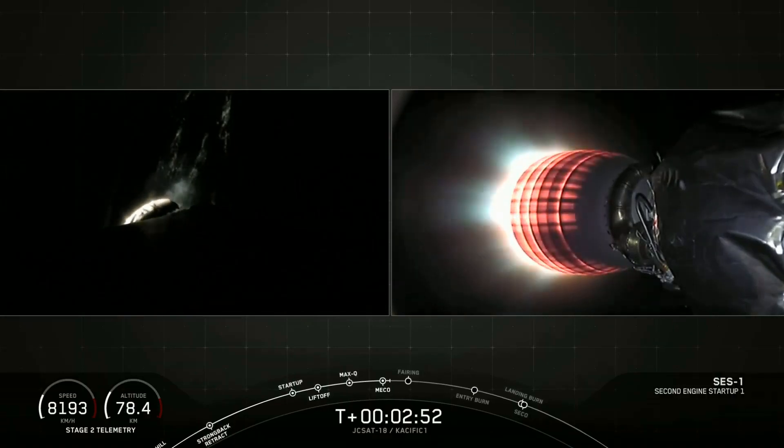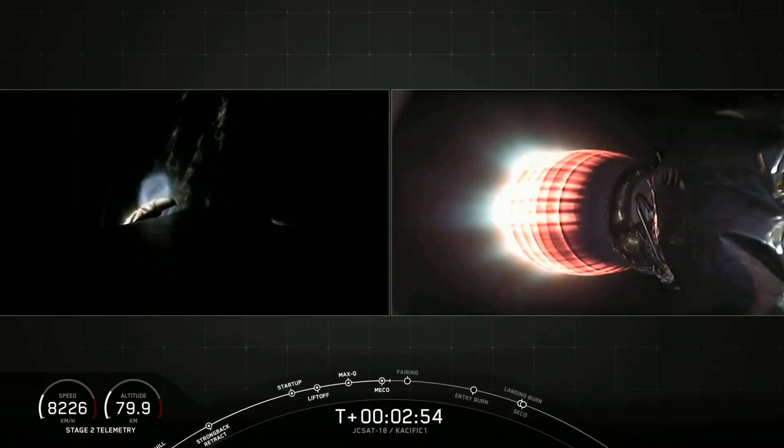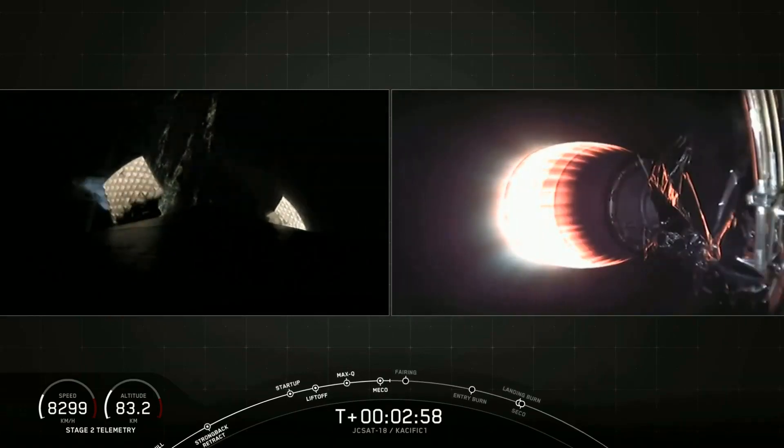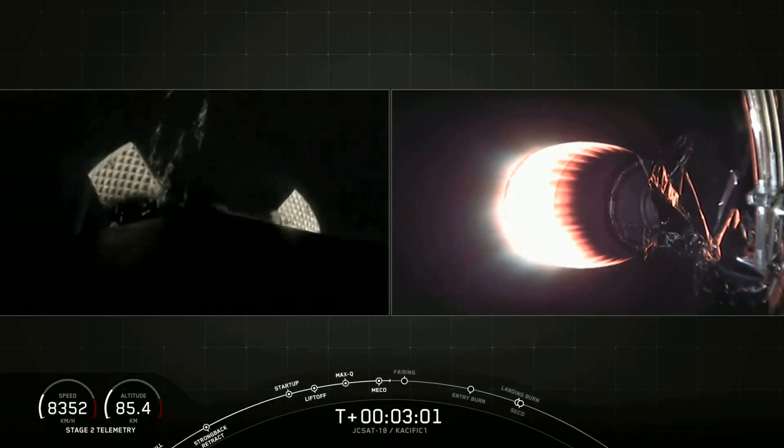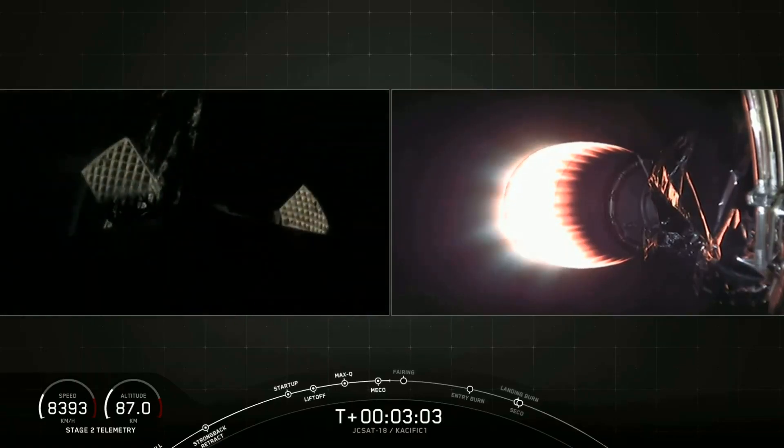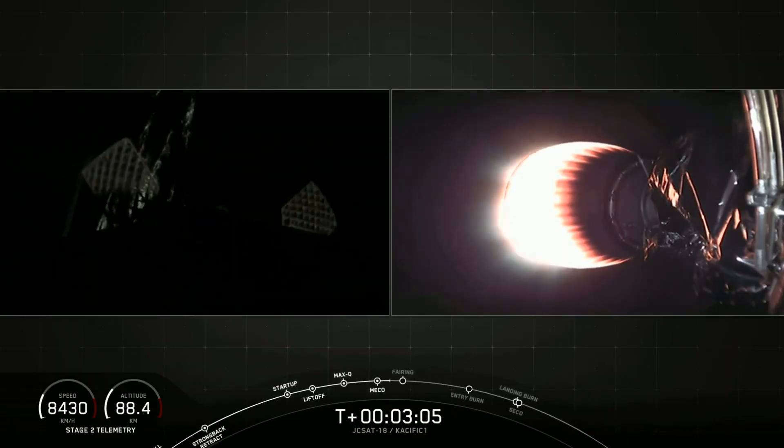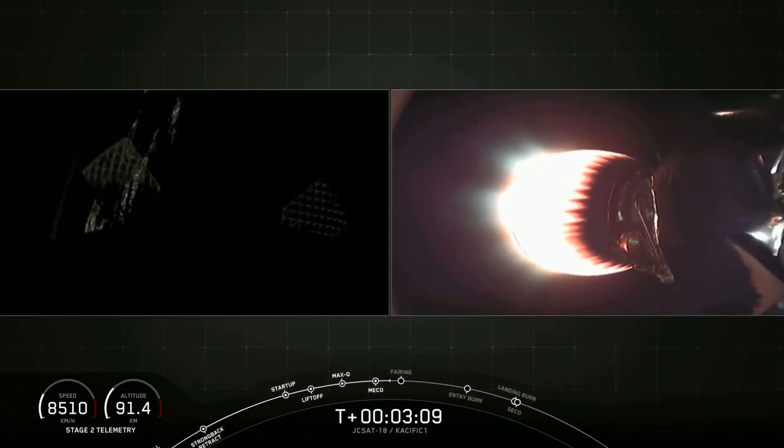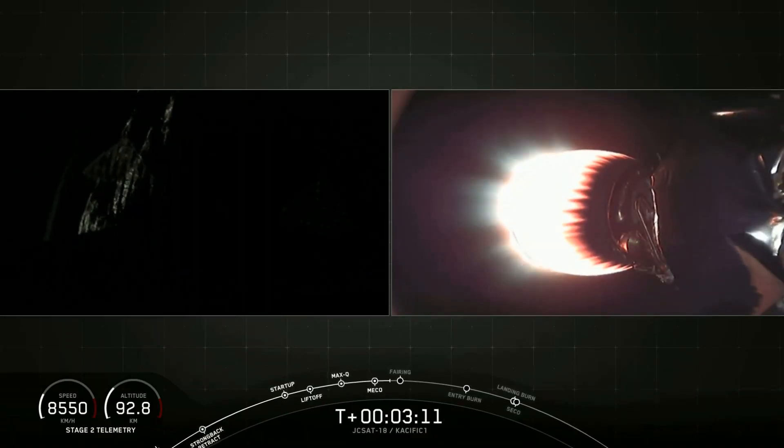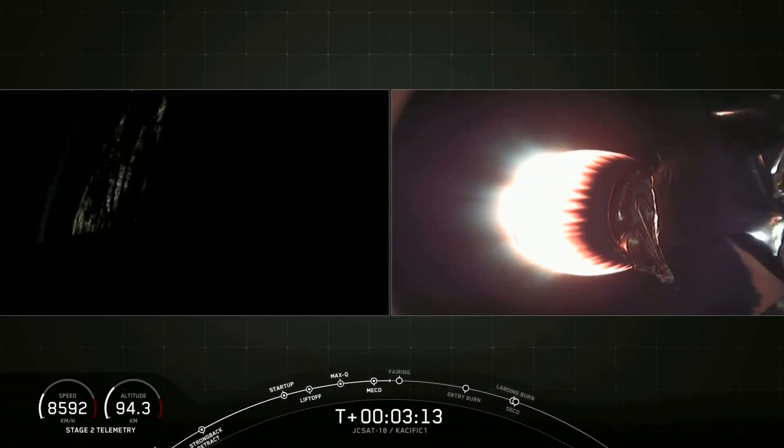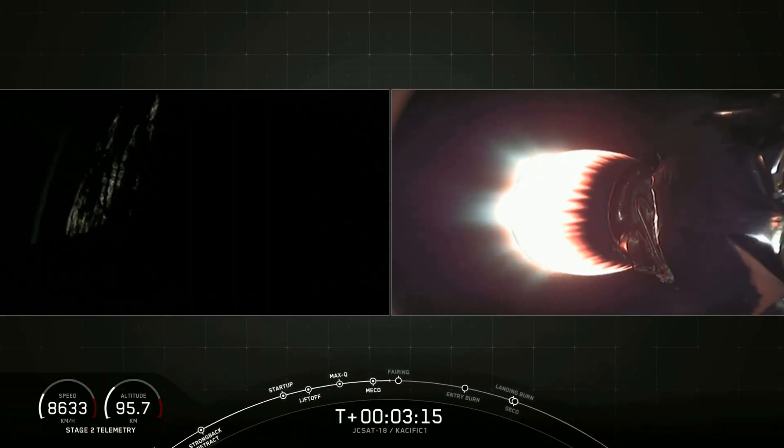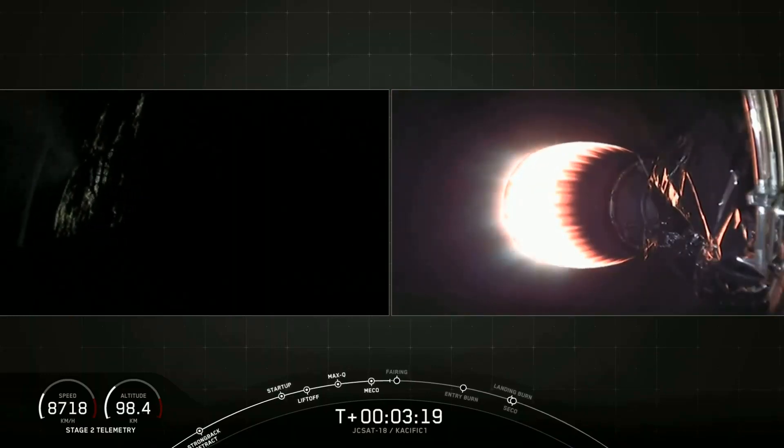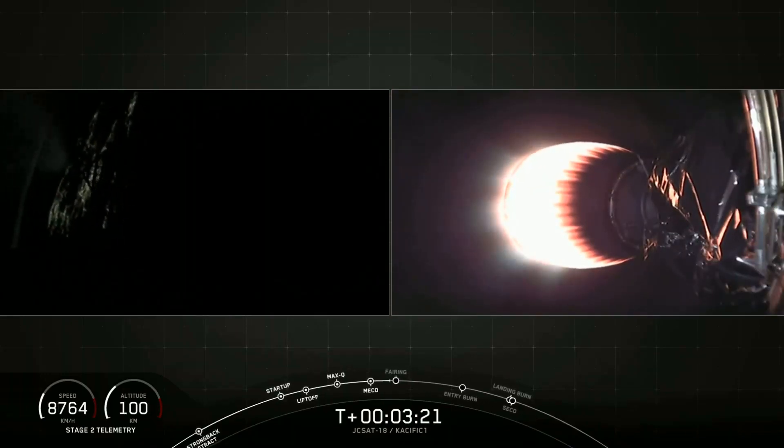On the left hand side of your screen, MECO, stage separation. As the second stage engine begins to glow bright orange, we have confirmation of both stage separation and second engine start. On the left side you'll see stage one as it begins its descent to the drone ship Of Course I Still Love You. You can see the lights of Cape Canaveral in the background, and on the right is the second stage.